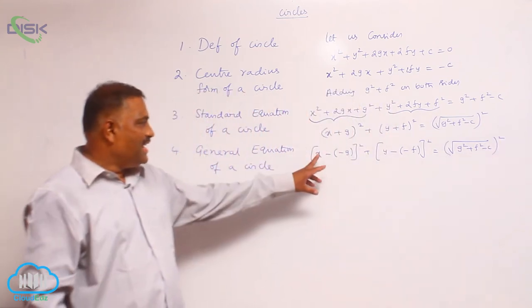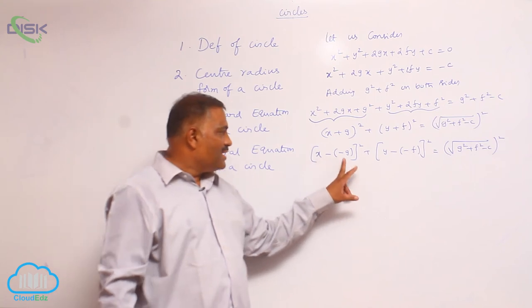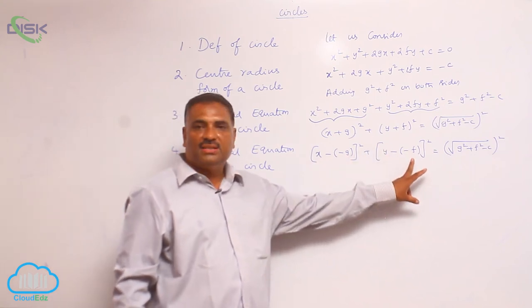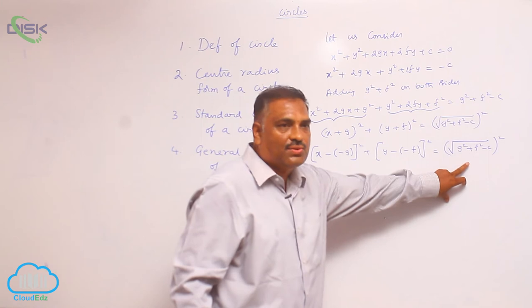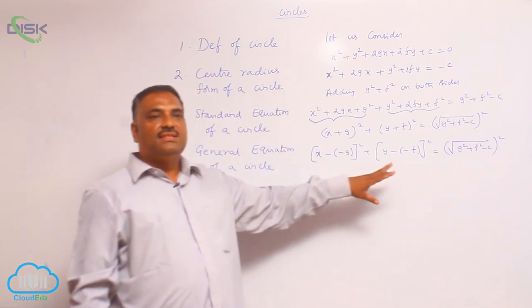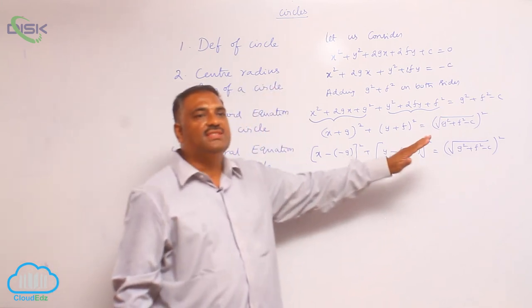We observe that it is in the format of x minus a whole square plus y minus b whole square equal to r square. This is again center radius form of a circle.